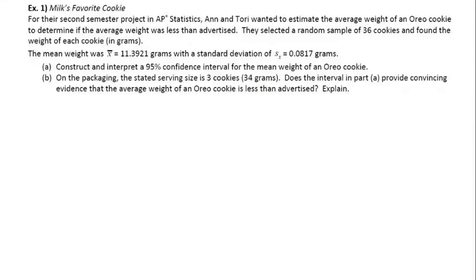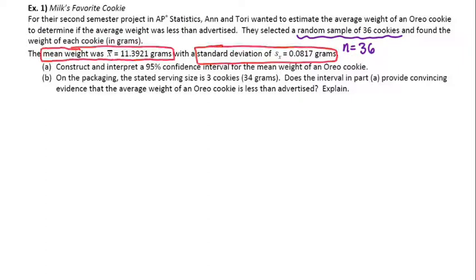That is the type of problem that we're going to need the four-step process for if we want to get full credit. That's one of those state, plan, do, conclude problems that uses a four-piece grading rubric for each part. So let's make sure we hit each one. We've got the sample size being 36 cookies, the mean weight for the sample, the standard deviation of the sample. We want to construct a 95% confidence interval. So let's start with the state step.